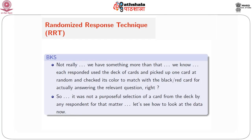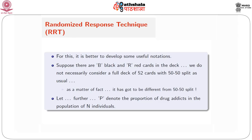Let us now develop some useful notations. Imagine there are B black cards and R red cards in the deck given to the respondent. We do not necessarily consider a full deck of 52 cards with a 50-50 split — in fact, it has got to be different from a 50-50 split. In the collection we put B black and R red cards, where B and R don't have to be equal — we may take 20 black and 15 red cards, for example. Let capital P denote the proportion of drug addicts in the population of N individuals.